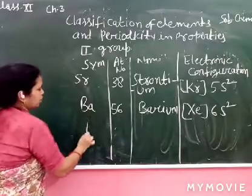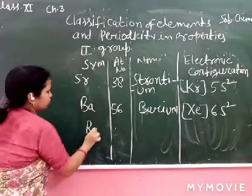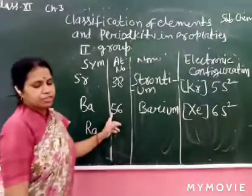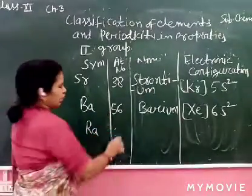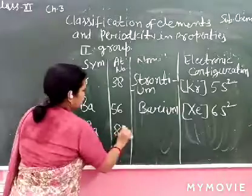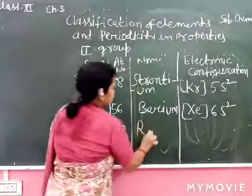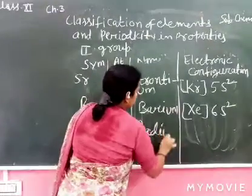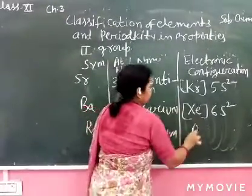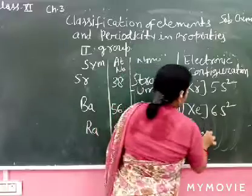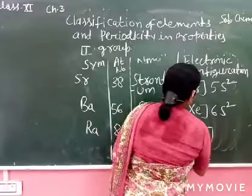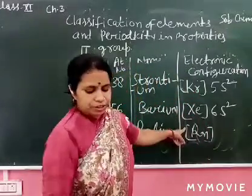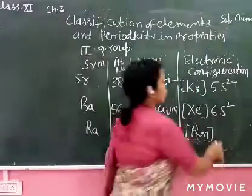Now Radium. Its atomic number is 88. Radium is radioactive. And its electronic configuration is [Rn] 7s².